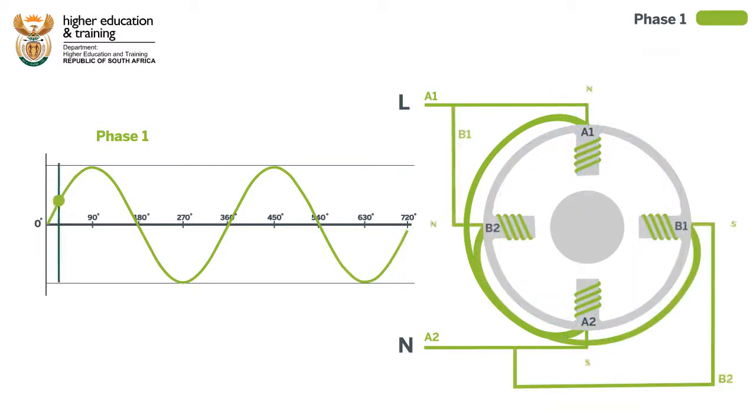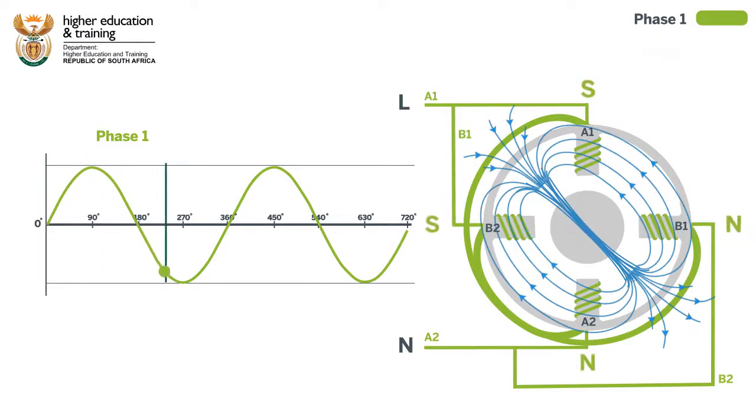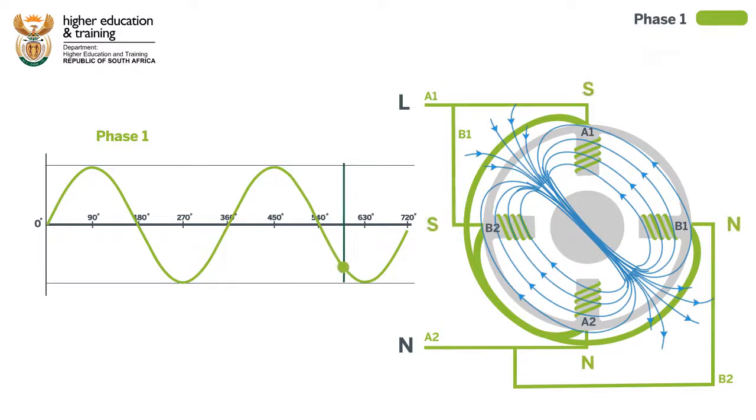Just adding an extra pair of windings at 90 degrees does not help, because the current to these windings, and hence the polarity of the magnetic field created, is still in phase with the first pair of windings, and the polarity of the stator just keeps flipping back and forth.